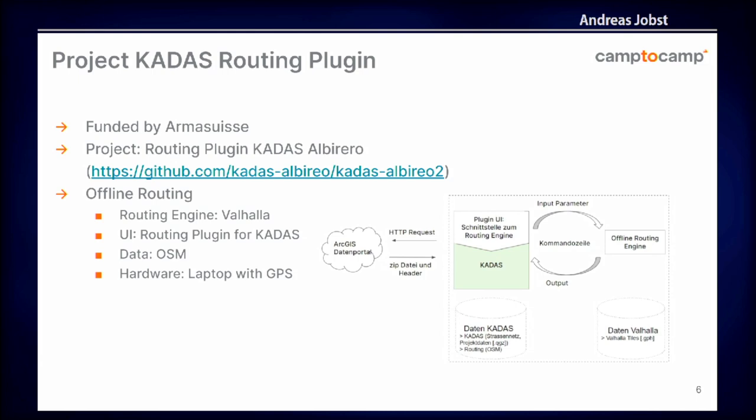The project was actually funded by AmaSwiss. The idea was to have an offline routing solution for Swiss military students — they would have the standard laptop and in case of no internet connection, they'd still be able to do all kinds of different routing things. They already have the desktop GIS CADAS, and to add some functionality, we worked on this routing plugin.